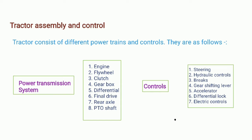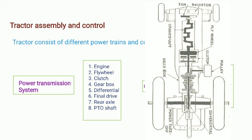Let's see the different elements of a tractor. There are different power transmission systems and controls. The power transmission elements in a tractor are: one, engine — it generates the mechanical power required for the tractor; two, flywheel; three, clutch; four, gearbox; five, differential; six, final drive; seven, rear axle; and eight, PTO, meaning power take-off shaft.